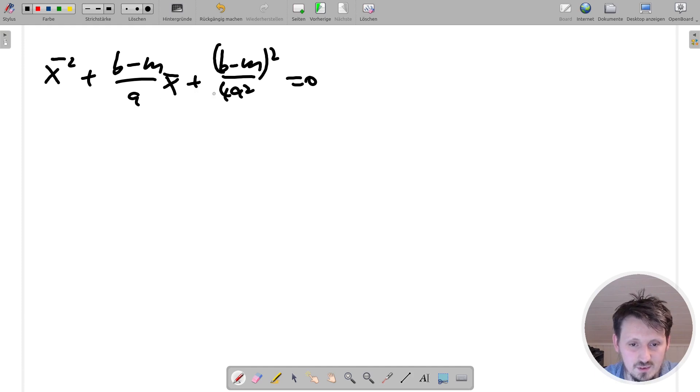So this is, if you take a closer look at this, you will come to the conclusion that this is actually what comes out when you solve a binomial formula. So this, we have to now use the first binomial formula, but reversely. Now, and if you do that, then it turns out that this is actually X bar plus B minus M divided by two A squared equal to zero.